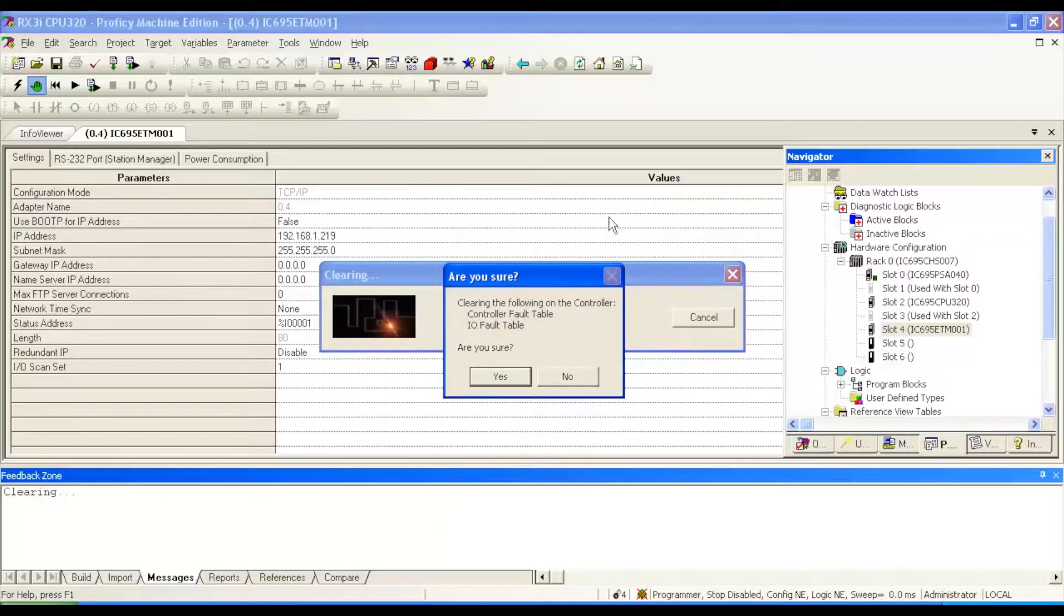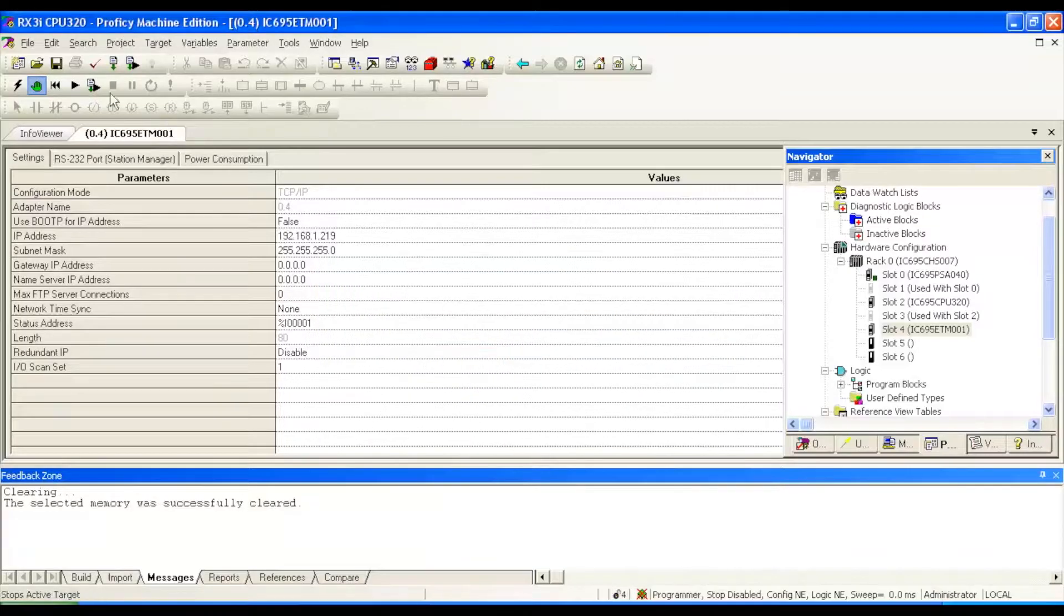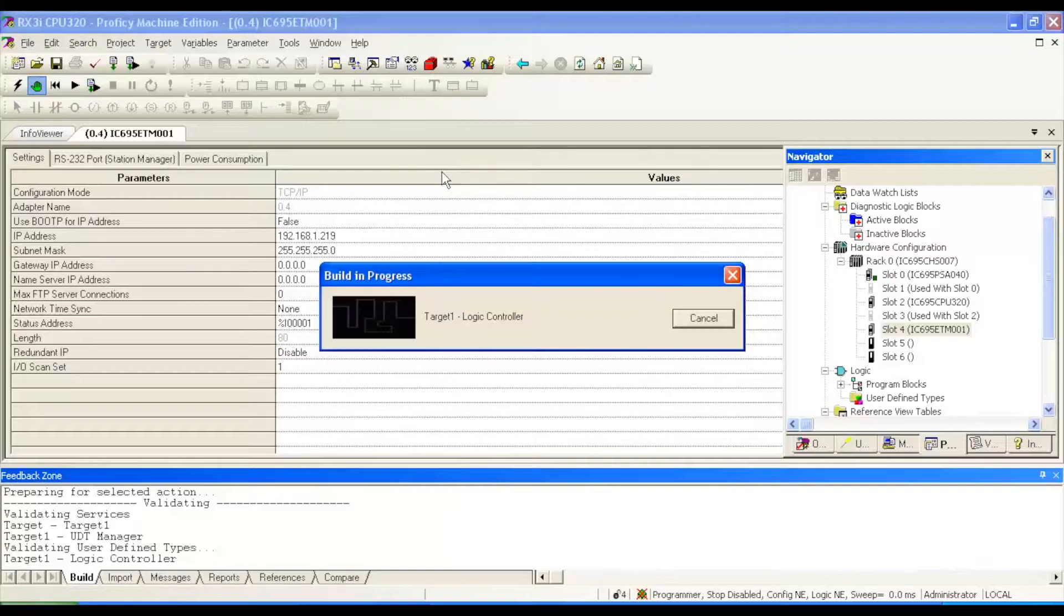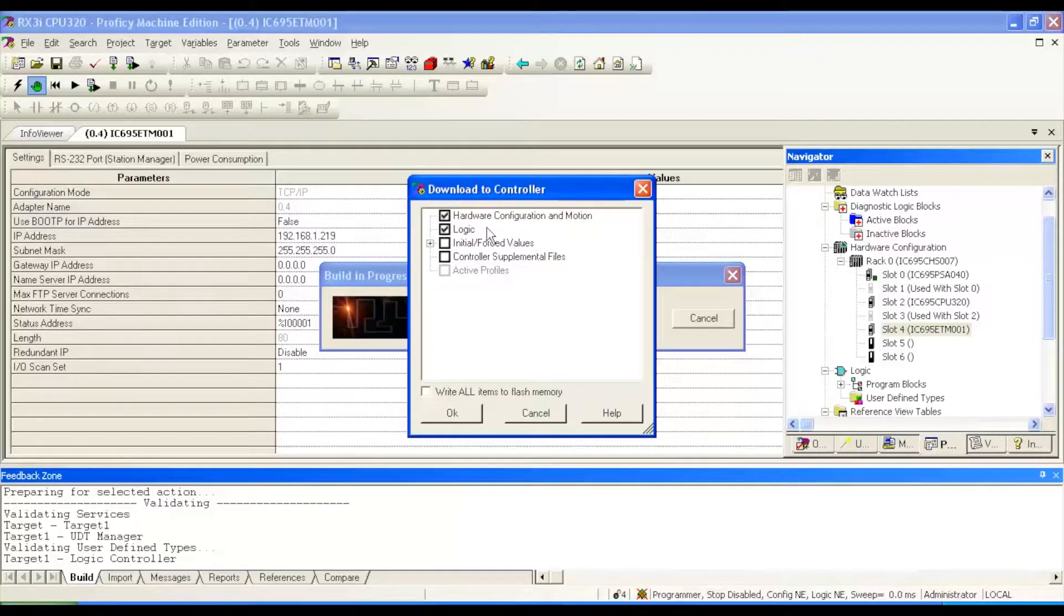Then download and run. The first thing it's going to ask us is what exactly do we want to download to the processor. It'll be the first two selections, configuration and logic. Hardware configuration in motion and logic. We don't want to write anything to the permanent flash memory or anything else.